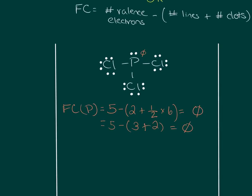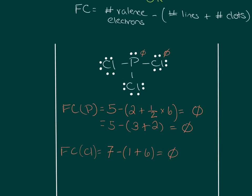Next, calculate the formal charge on chlorine — pick any chlorine. Formal charge on Cl equals the number of valence electrons, which is seven, minus the number of lines (one) plus the number of dots (six). So the formal charge on chlorine is zero. All three chlorine atoms look the same in terms of lines and dots, so all have a formal charge of zero.